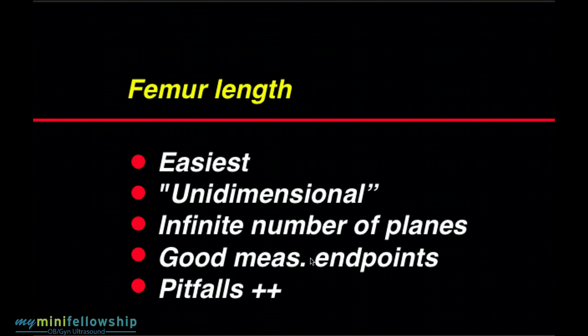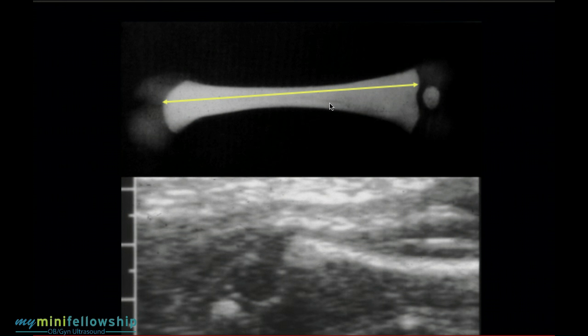Again, with the femur, we are measuring the bone, so the end points of measurement are good, and therefore the number of pitfalls in this measurement are small. The best way to describe what we are measuring throughout gestation is to say we are measuring the greatest longitudinal dimension of the primary ossification center of the femur.